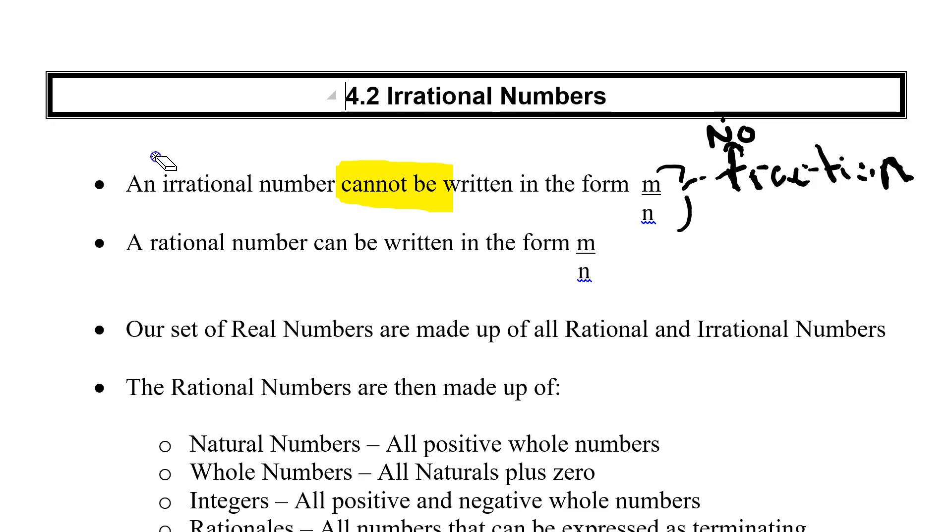So we've got to get numbers that cannot be represented as a fraction. We're talking about stuff like pi. Pi, of course, is that number 3.14, never repeats, never ends. So that would be one. Another one would be like the square root of 2. Square root of 2 is a number that never ends, never repeats.